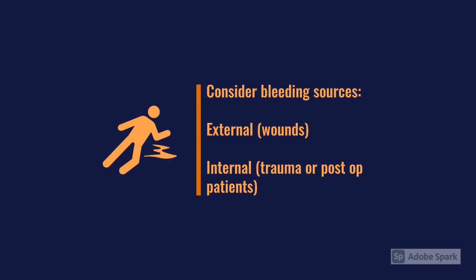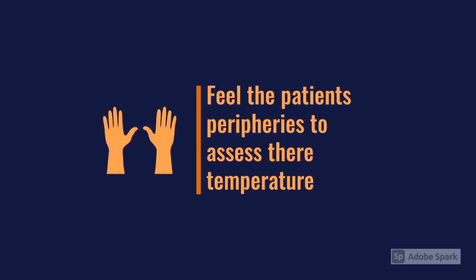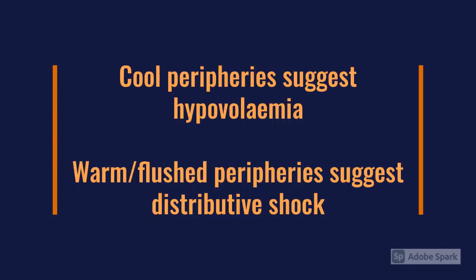Check for any obvious external bleeding or suspicion of internal bleeding — is it a trauma patient or a post-op surgical patient where suspicion for bleeding is higher? When examining the patient, feel their peripheries: the hands and the knees. Cold knees are a bad prognostic indicator. Cool peripheries generally suggest a hypovolemic picture, as opposed to someone who is warm and flushed, which suggests vasodilation from distributive shock such as anaphylaxis or neurogenic shock.